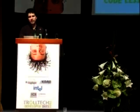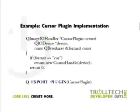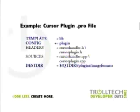Here we see the create function: if the format matches, we create the handler and all the logic is in the handler. At the end is the QExportPlugin entry point macro, which is very important. The profile is very similar to before, except this time we put the plugins into Qt's directory — slash plugins slash imageformats. Different types of plugins go in different subdirectories of Qt's plugins directory, and image formats must be in imageformats otherwise they won't be recognized by Qt.